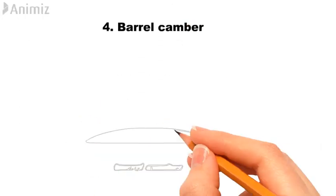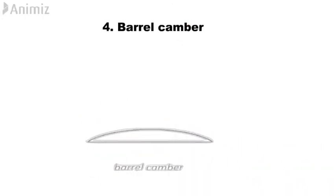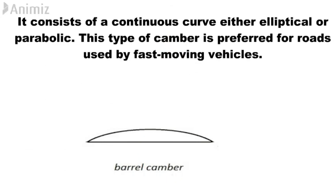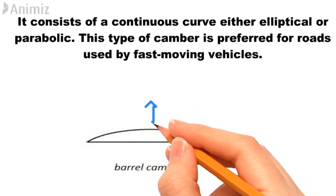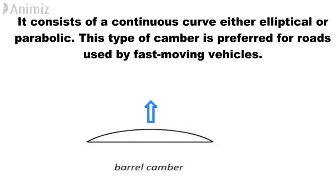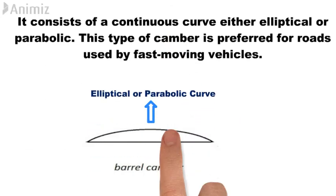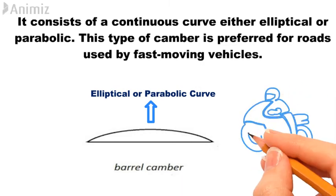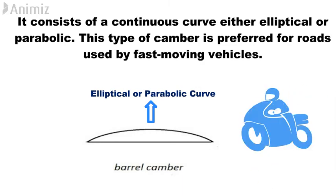Four: Barrel camber. It consists of a continuous curve, either elliptical or parabolic. This type of camber is preferred for roads used by fast-moving vehicles.